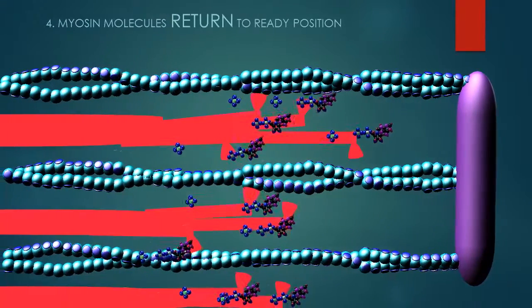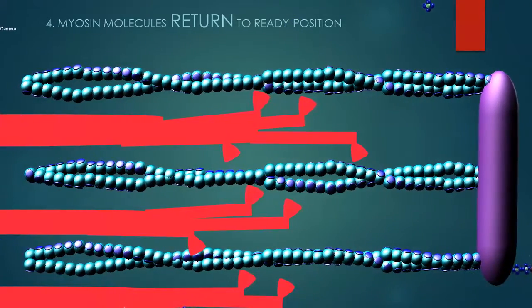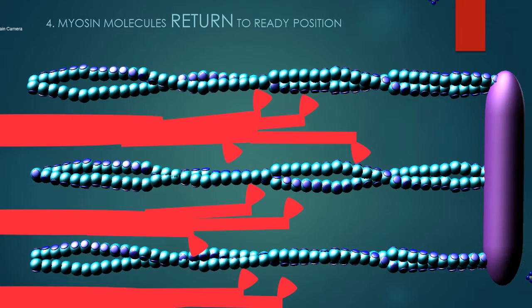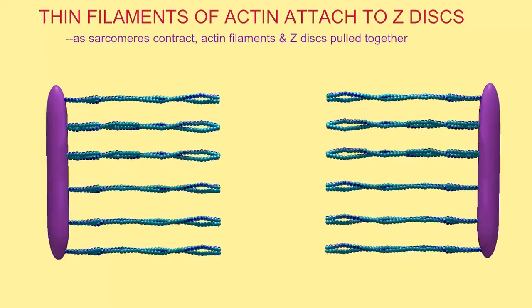And fourth, using the energy stored in ATP, the myosin molecules will return to their cocked and ready position. This cycle of attach, pivot, detach, return...